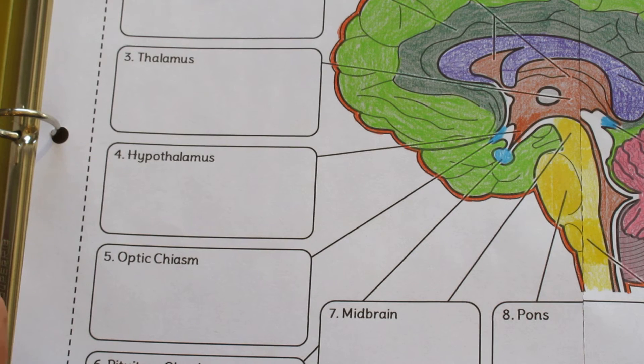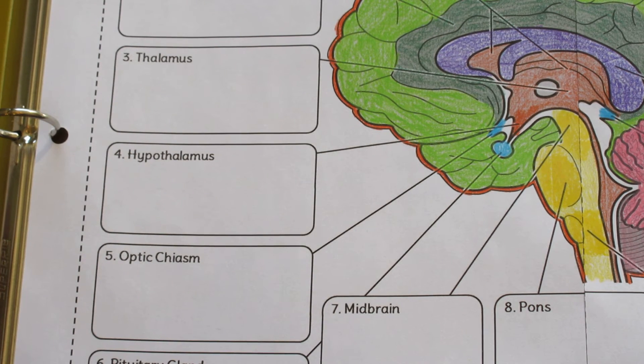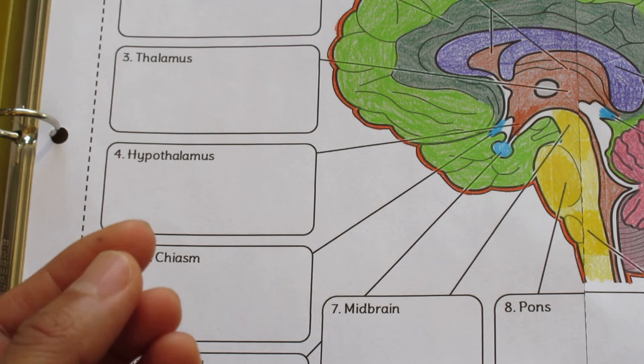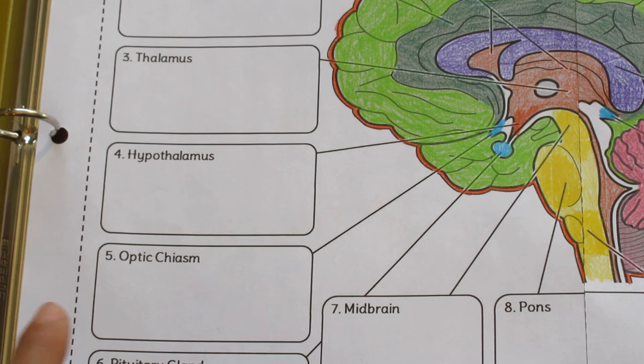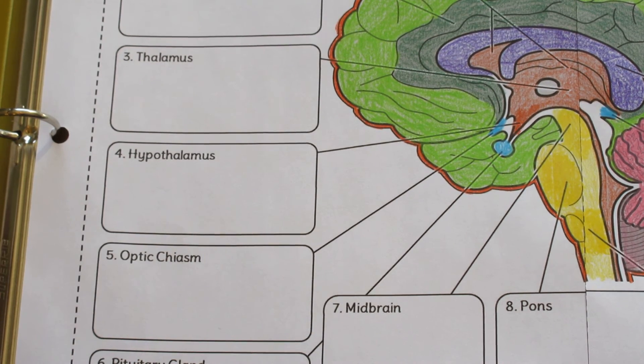Now another one of the options I provide looks very similar to this, except that I don't give the labels; I provide a blank after the number. And that is for more advanced students for whom you might want to ask questions like, does anyone know the name for structure number four? This will allow for more participation.